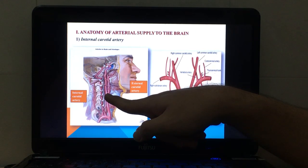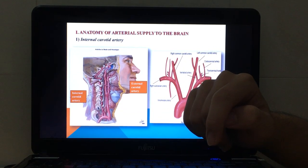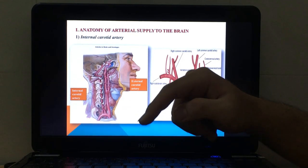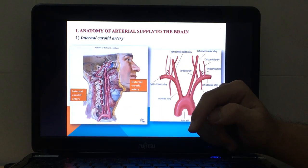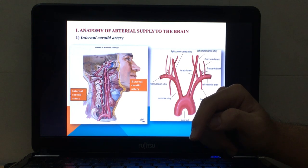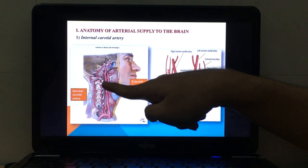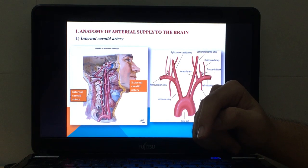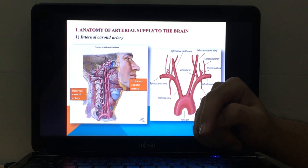The internal carotid arteries arise from the bifurcation of the common carotid artery at about the level of the superior border of the thyroid cartilage, corresponding to the C4 vertebra. They are described as the direct continuation of the common carotid with no branches in the neck.